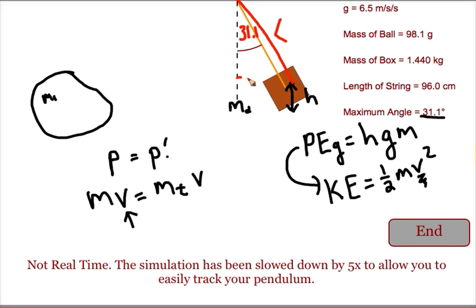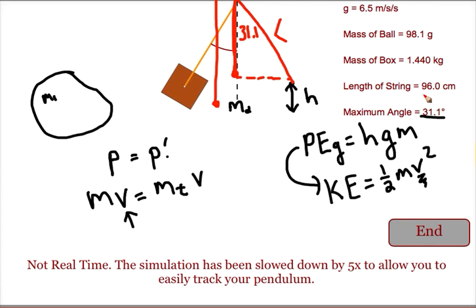We turn this into a triangle and we find this vertical part of the triangle. Once we know that vertical part of the triangle, we know that the entire length of the string is 96 centimeters. So the difference between this vertical part and the length of the string will be the height to which the box rose after the collision.